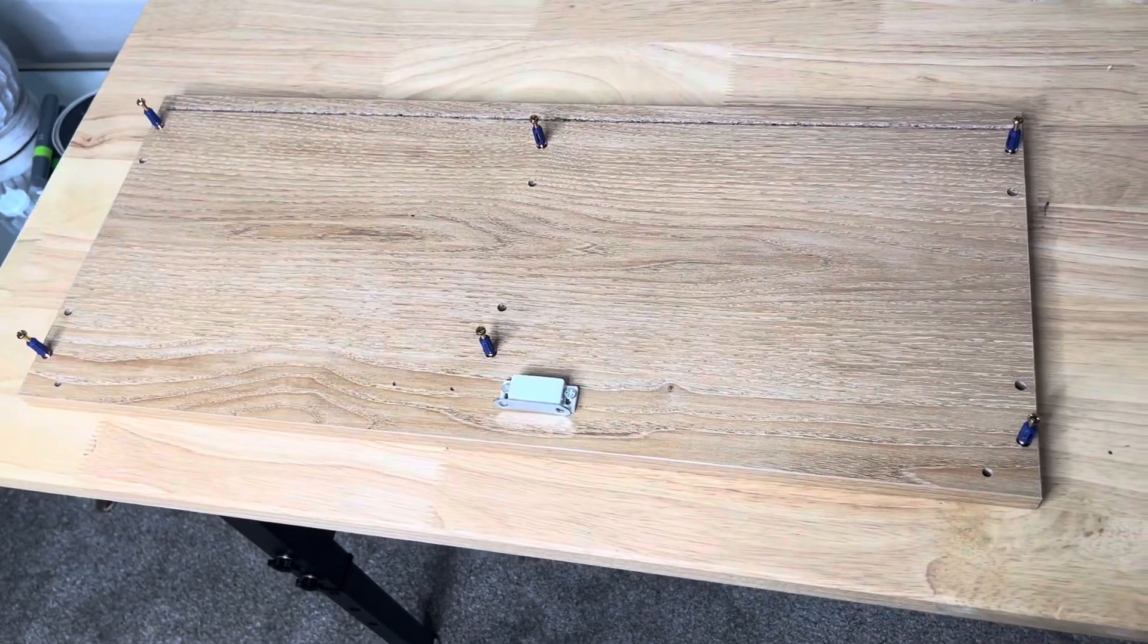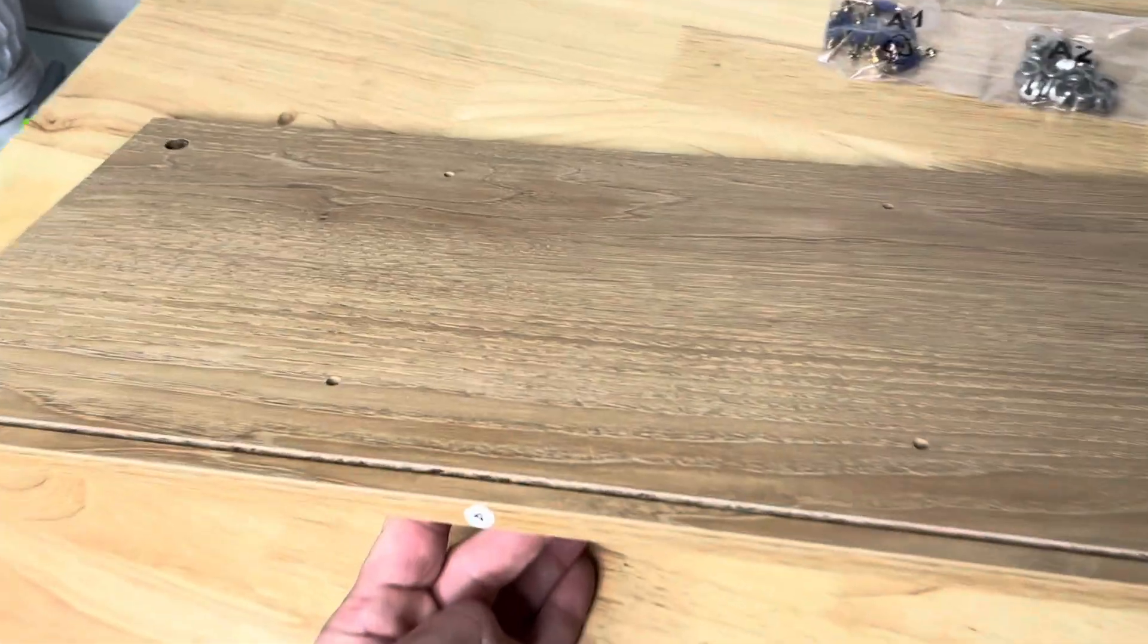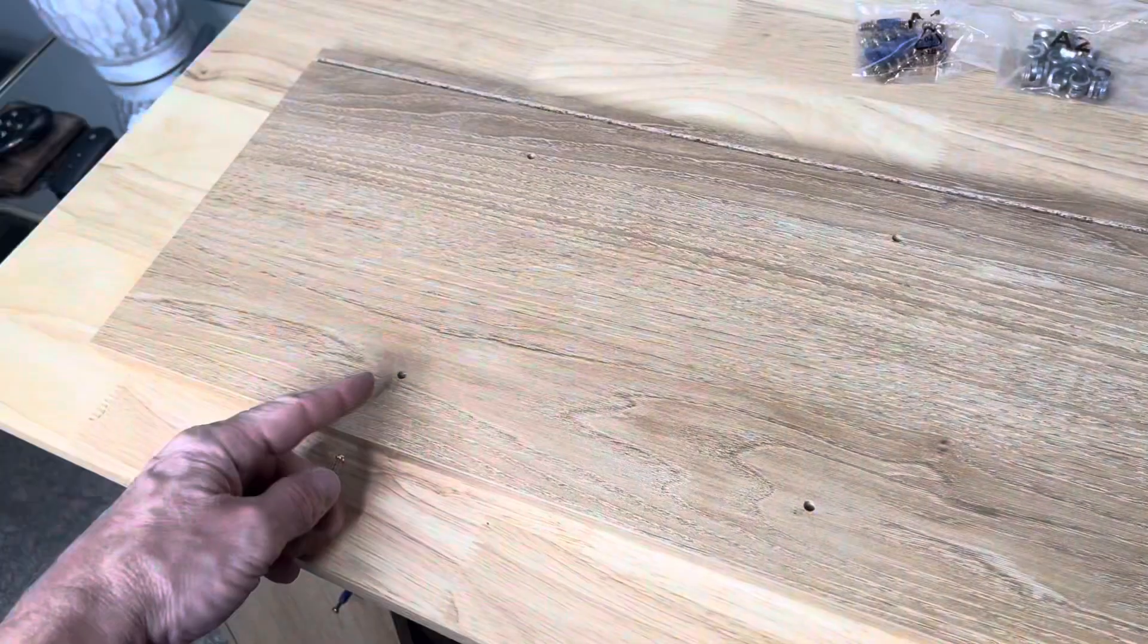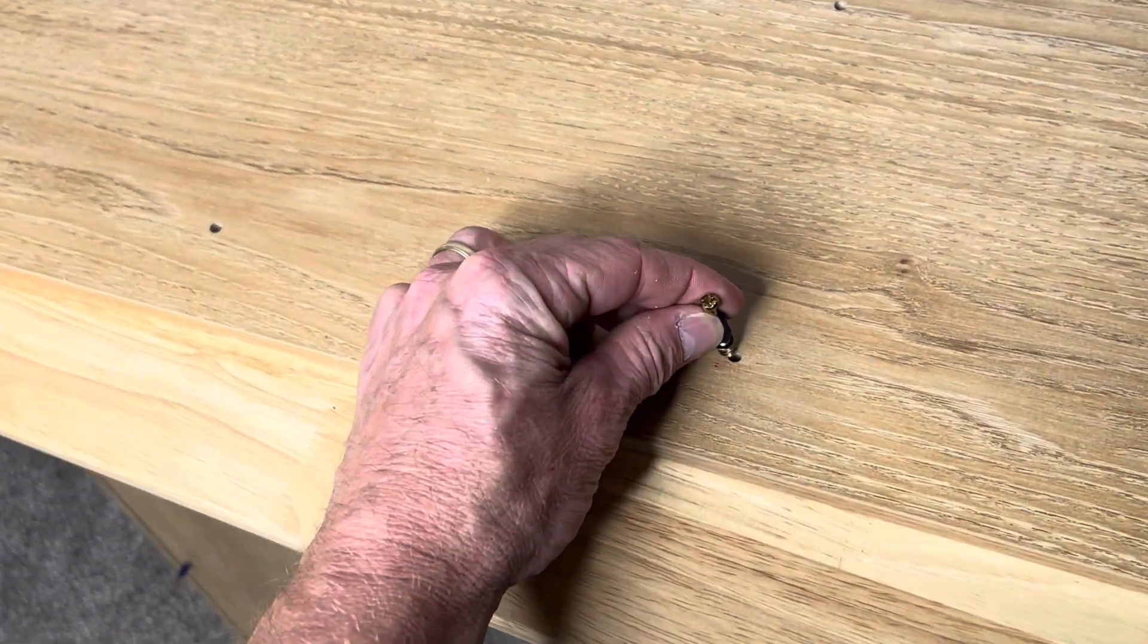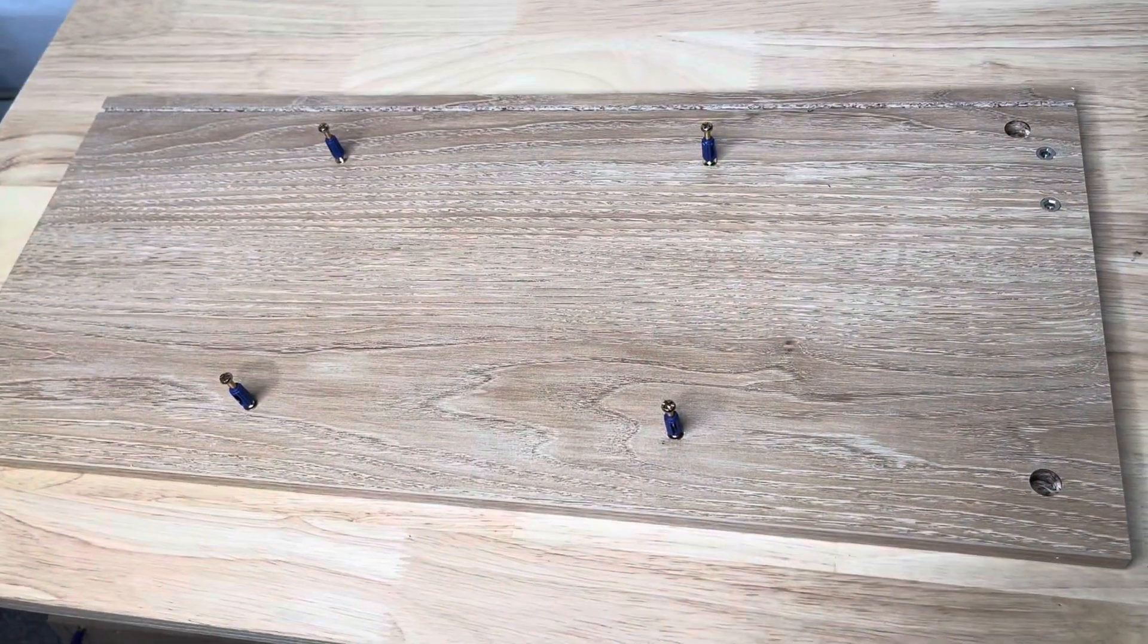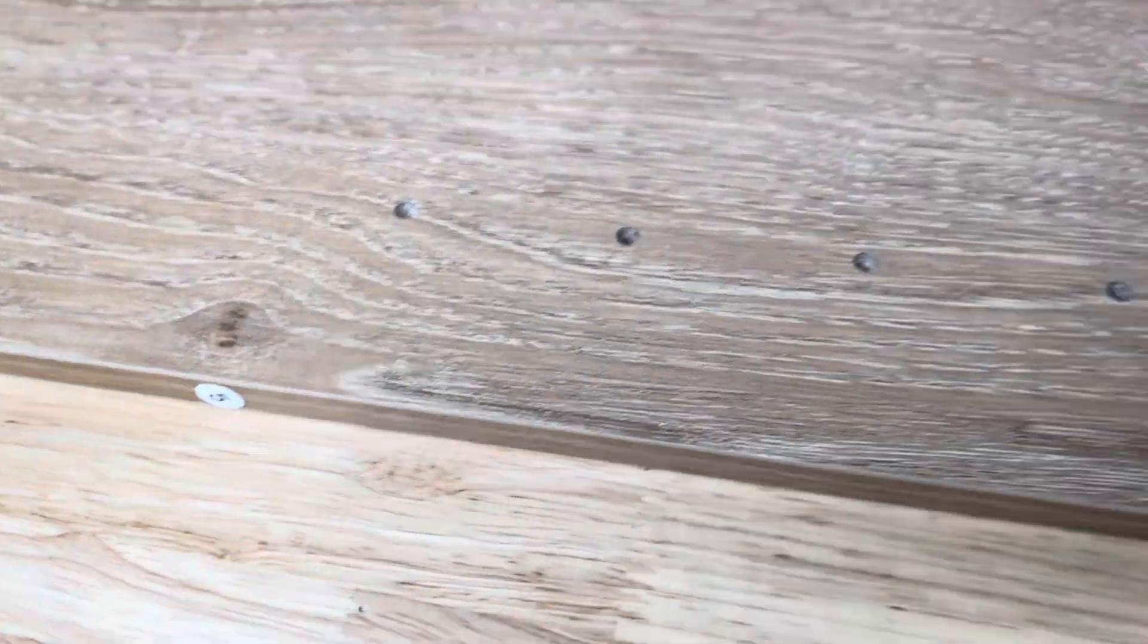Here's all the screws that go in the holes for our first step. The wooden dowel holes and the screw holes are made of different sizes, which is nice because you don't accidentally confuse them. The wood dowel holes are just a little bit bigger.